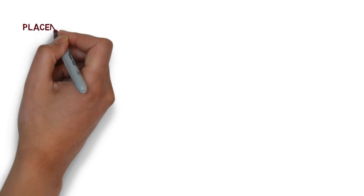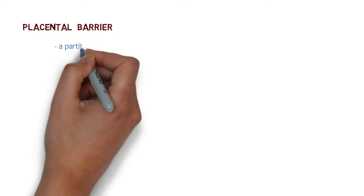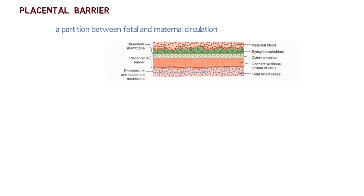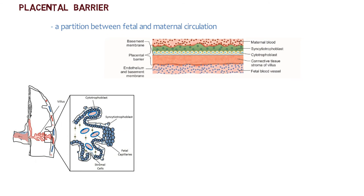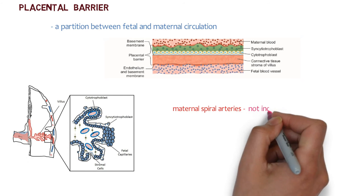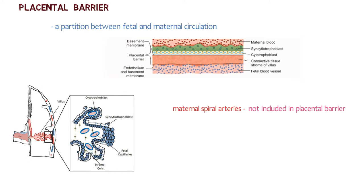The placental barrier or membrane is a partition between the fetal and maternal circulation. The structures separating maternal blood from fetal blood, from outside to inside, are: syncytiotrophoblast, cytotrophoblast, extraembryonic mesoderm, and the fetal capillary endothelium. Note that the maternal spiral arteries are not included in the placental barrier structures, because cytotrophoblast replaces the lining of maternal arteries through trophoblastic invasion, converting high-resistance to low-resistance maternal arteries.